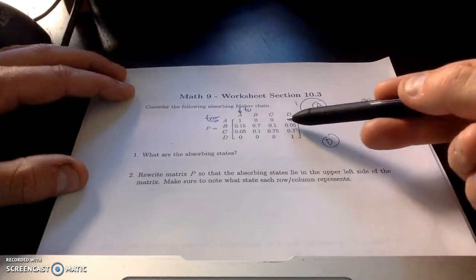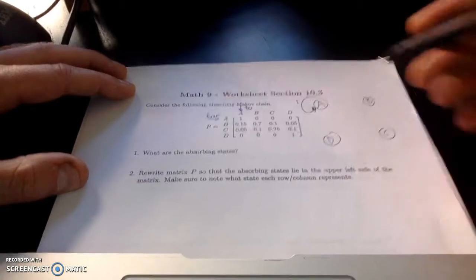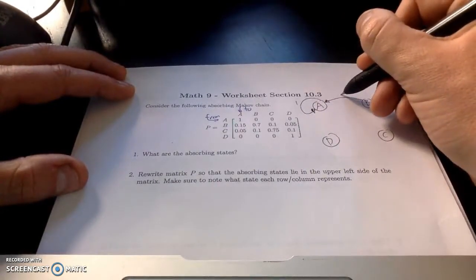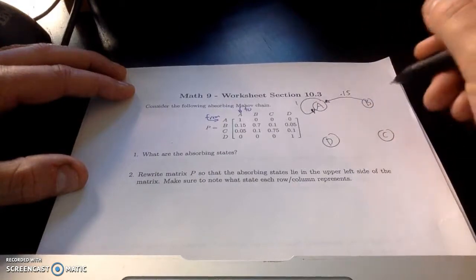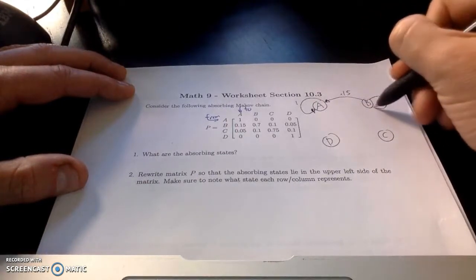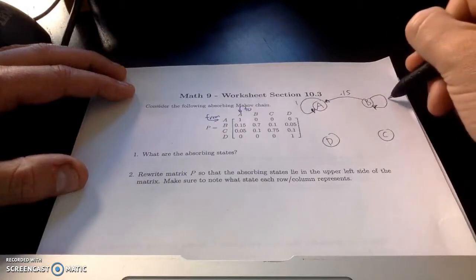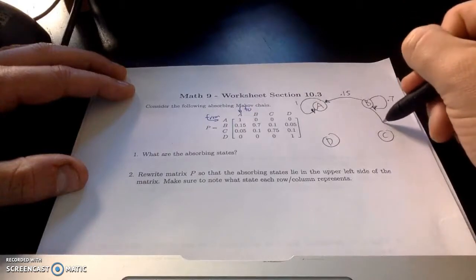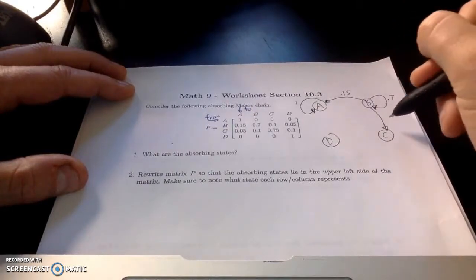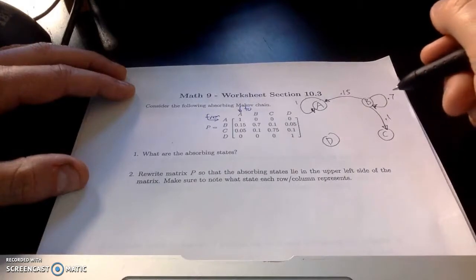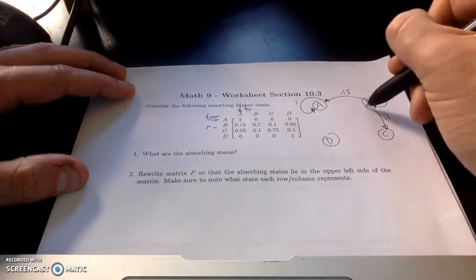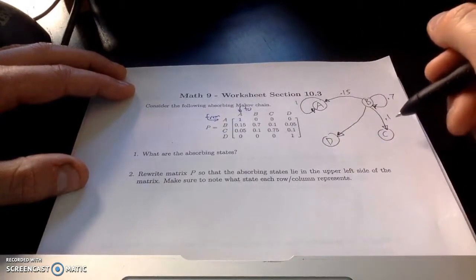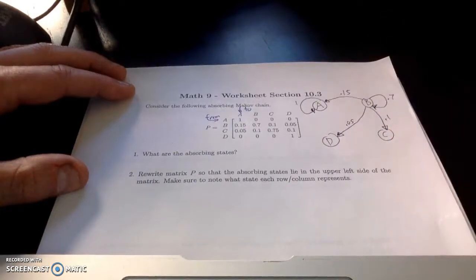I'm going to look now at the second row. And B, state B moves from state B to state A with a 15% probability. State B stays with state B at a 70% probability. State B goes from B to C with a 10% probability. And B goes to state D. And in this case, that's going to be with a 0.05% probability.